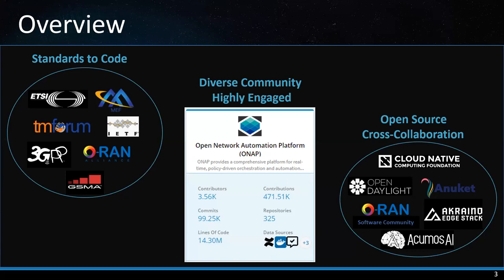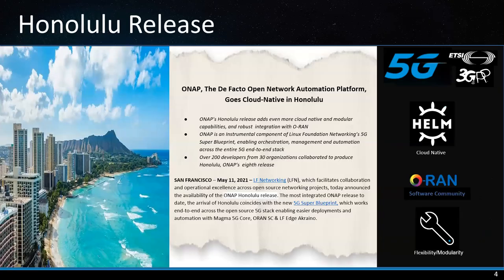The ONAP community values cross-collaboration with other open-source communities to orchestrate, manage, and automate a modern network stack. The ONAP Honolulu release contains announcements of three major use cases: the cross-domain and cross-layer VPN, the 5G self-organizing network, and N2N network slicing. It also includes 12 functional changes, four best practices, and two global requirements. The concept of best practices and global requirements consists of design patterns applicable to the whole code base, introduced to ensure we keep enhancing platform robustness.